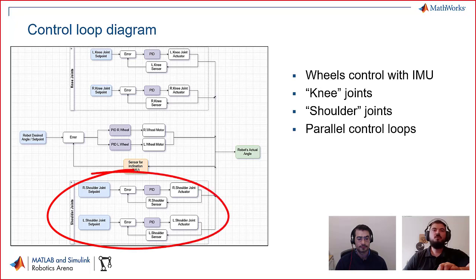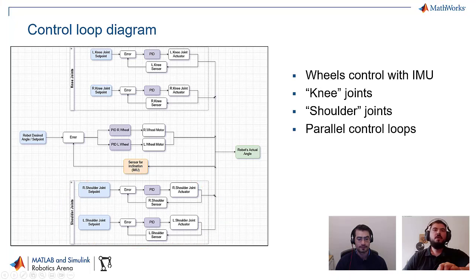At the bottom we have the shoulder joints and their corresponding closed control loops, and the way they work is that each of them feed their output to control the robot and make it stand balanced in an upright position.